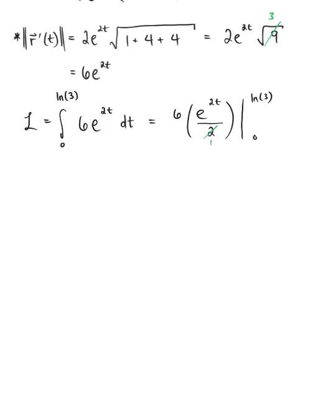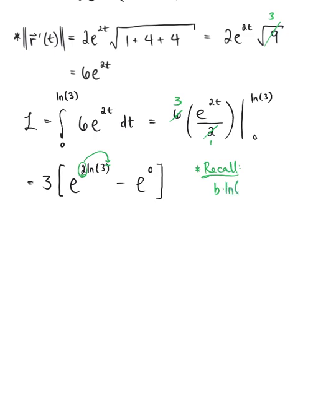We can simplify: 2 goes into 6 three times, so this equals 3 times the natural exponential raised to 2 times the natural log of 3, minus the natural exponential raised to 0. Be careful with the algebra here. In order to apply the inverse property of the natural exponential and the natural logarithm, we need to use the power property of logarithms and bring the 2 to the exponent position of the logarithm. Recall that b times the natural log of a is equivalent to the natural log of a raised to the b power.